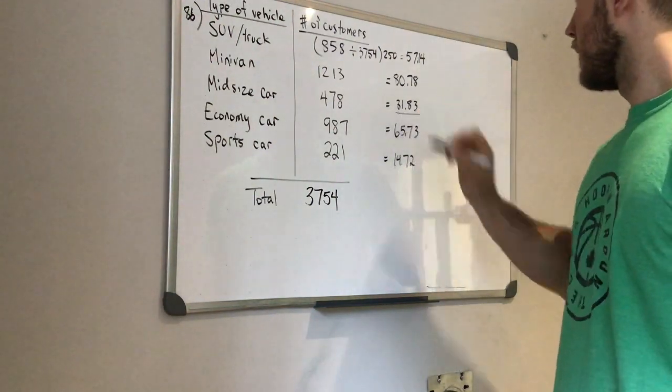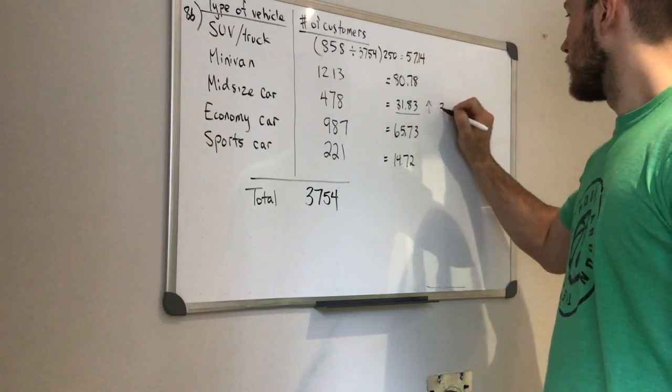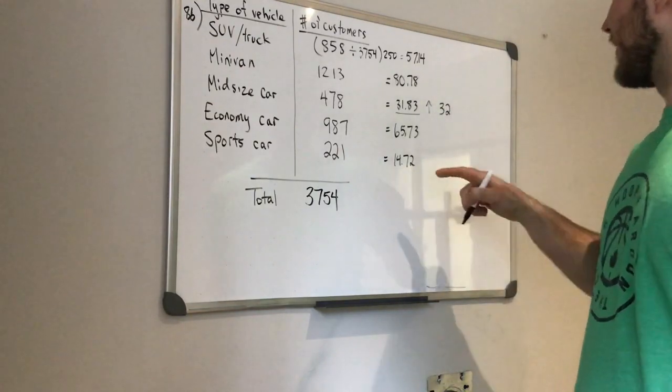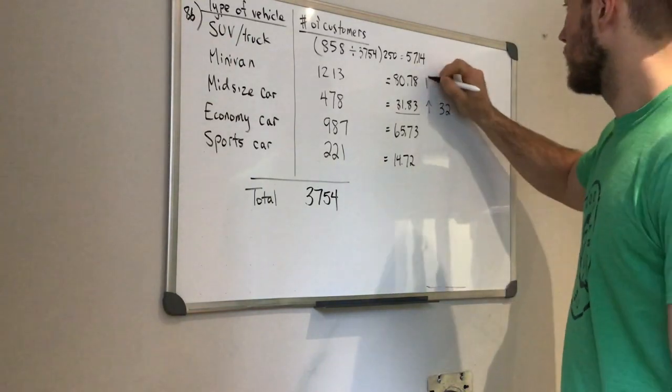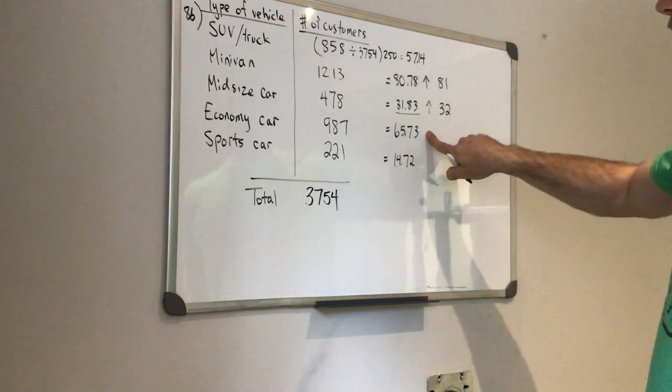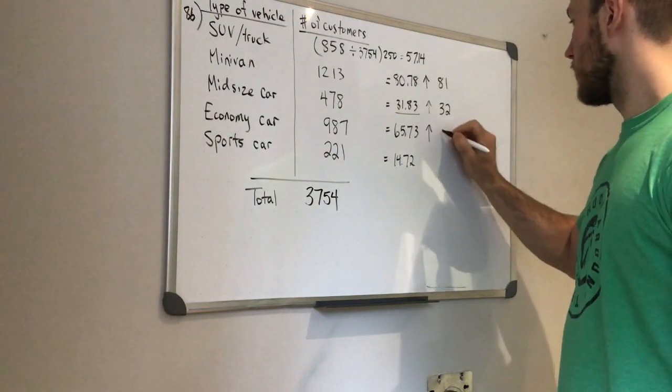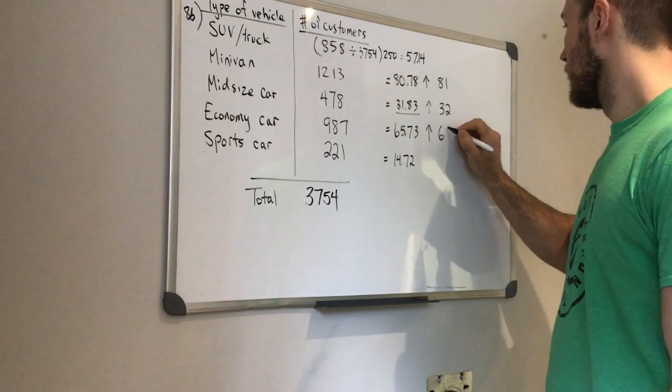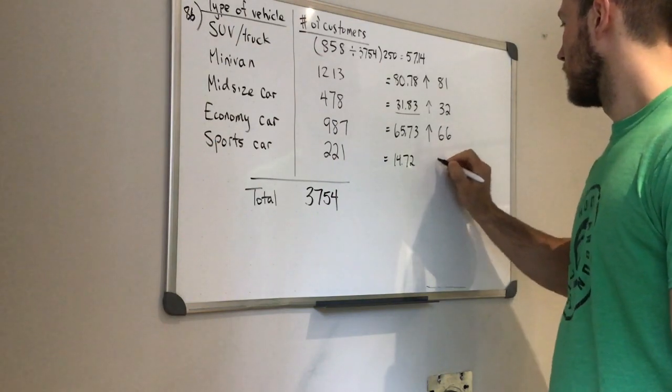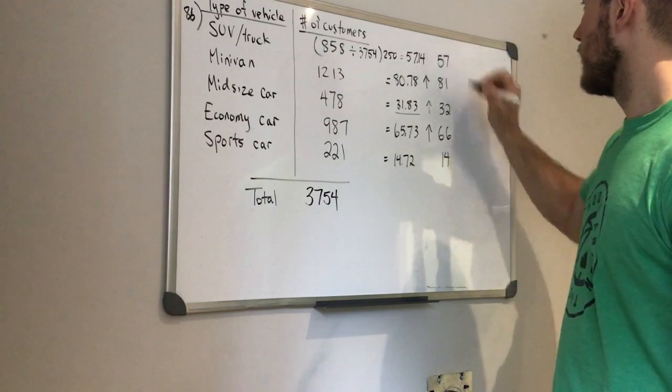So looking at this one right here, I am going to round this one up to 32. Our next largest would be here, so I am going to round this up to 81. And it looks like the economy car just narrowly beats out the sports car, so we will round this one up to 66. This will stay at 14, and this one will stay at 57.